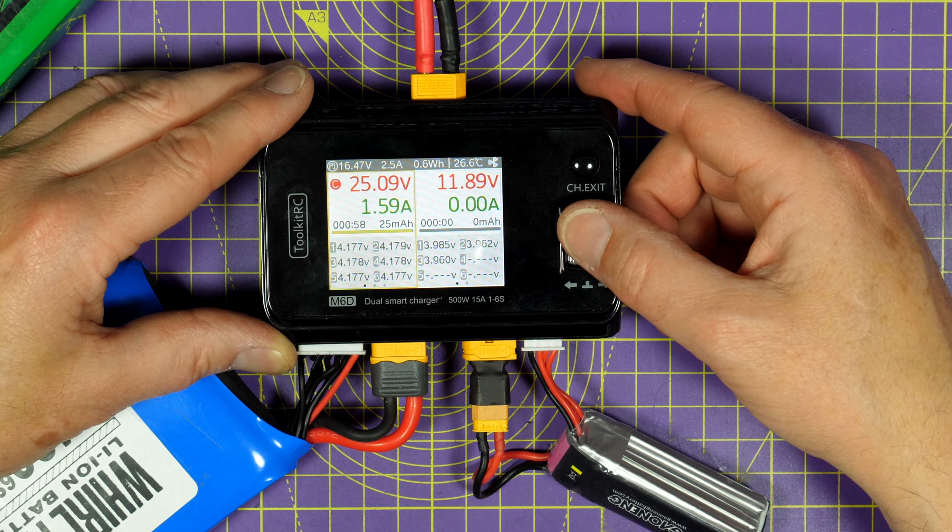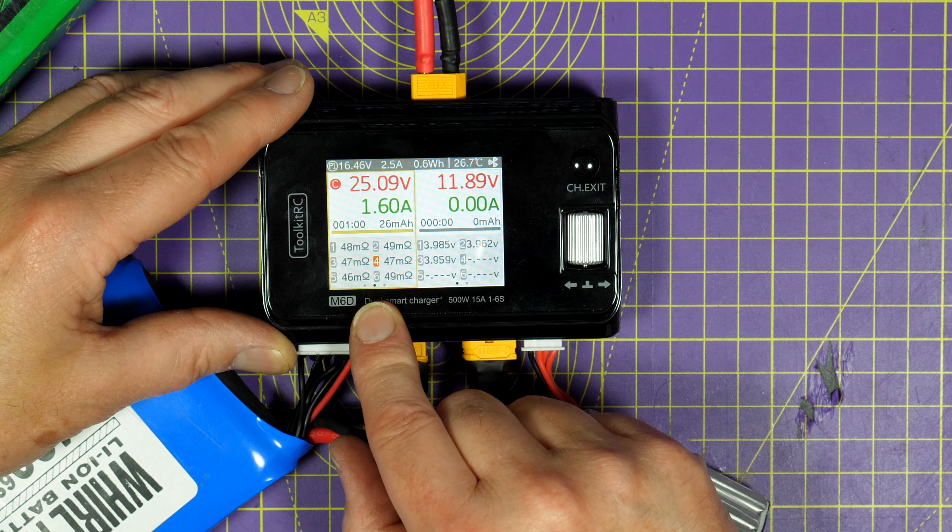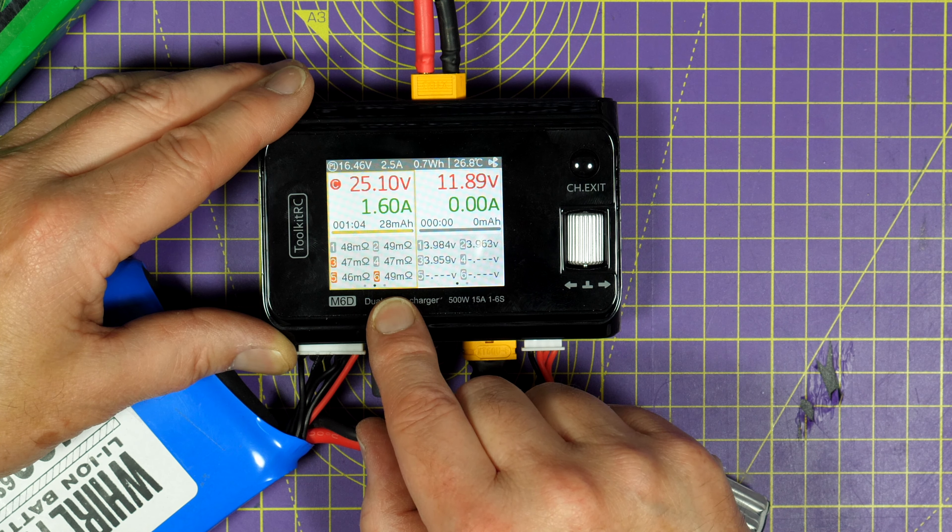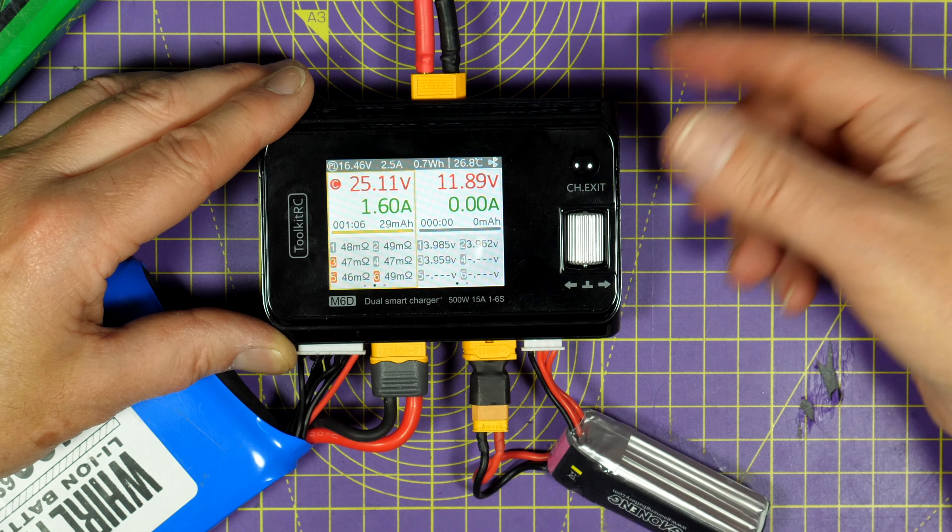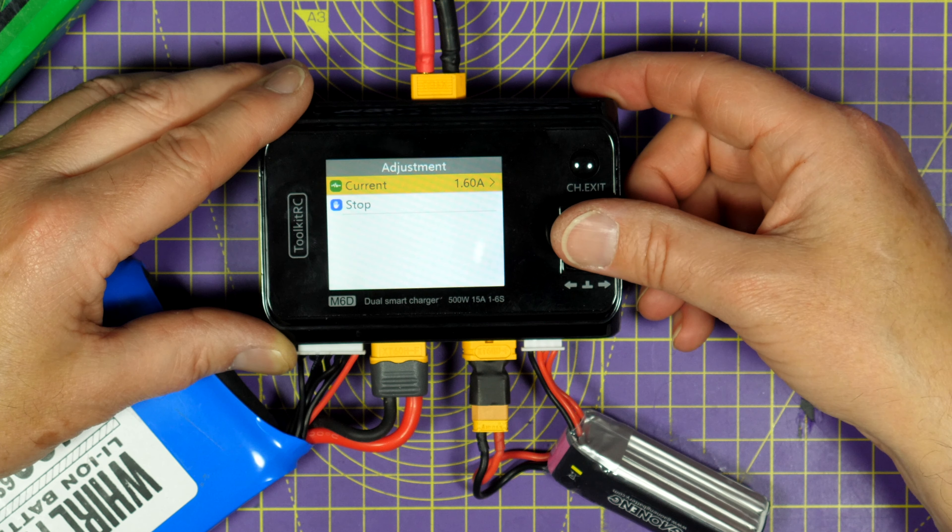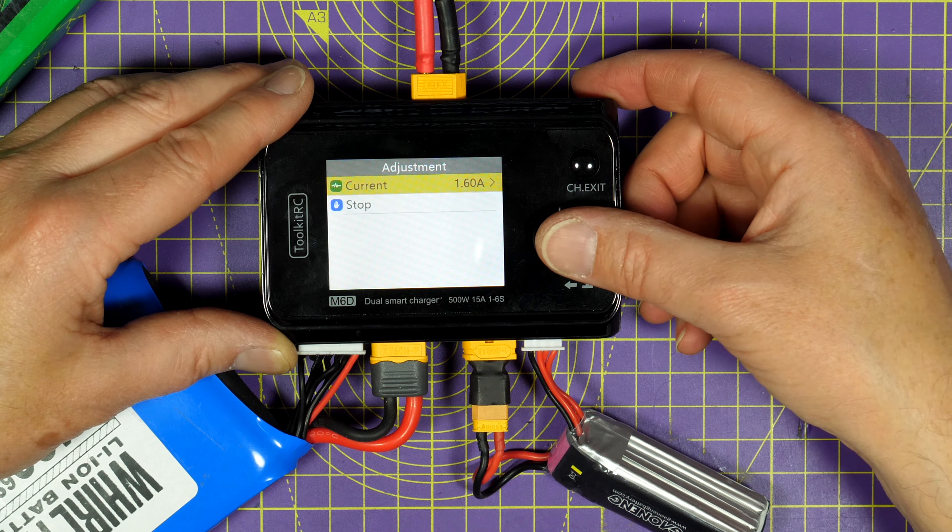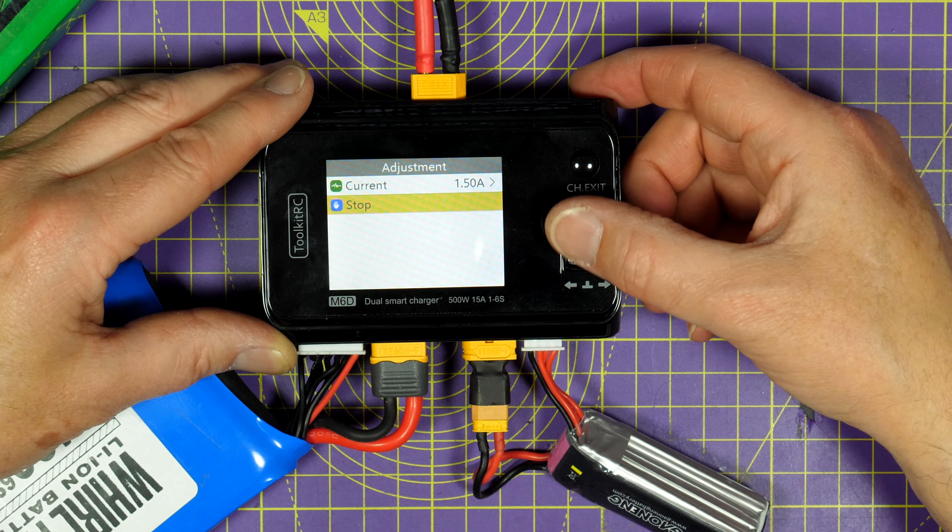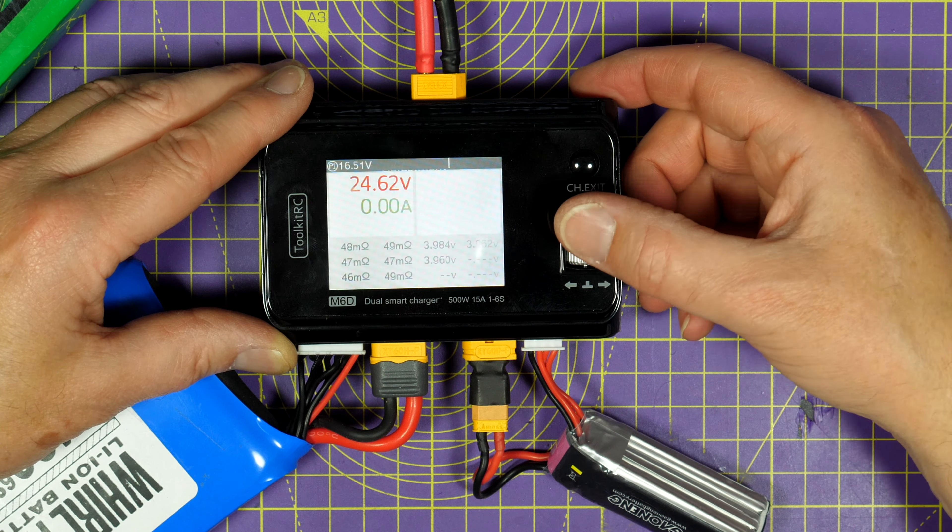That's caught up now. So these are all about 48 milliohms. If you want to stop or pause charging just click the scroll wheel and you can change the current if you want to or you can just stop charging which I'm going to do for a minute. And that's it. It's just fantastically easy to use. So let's charge this other pack at the same time.